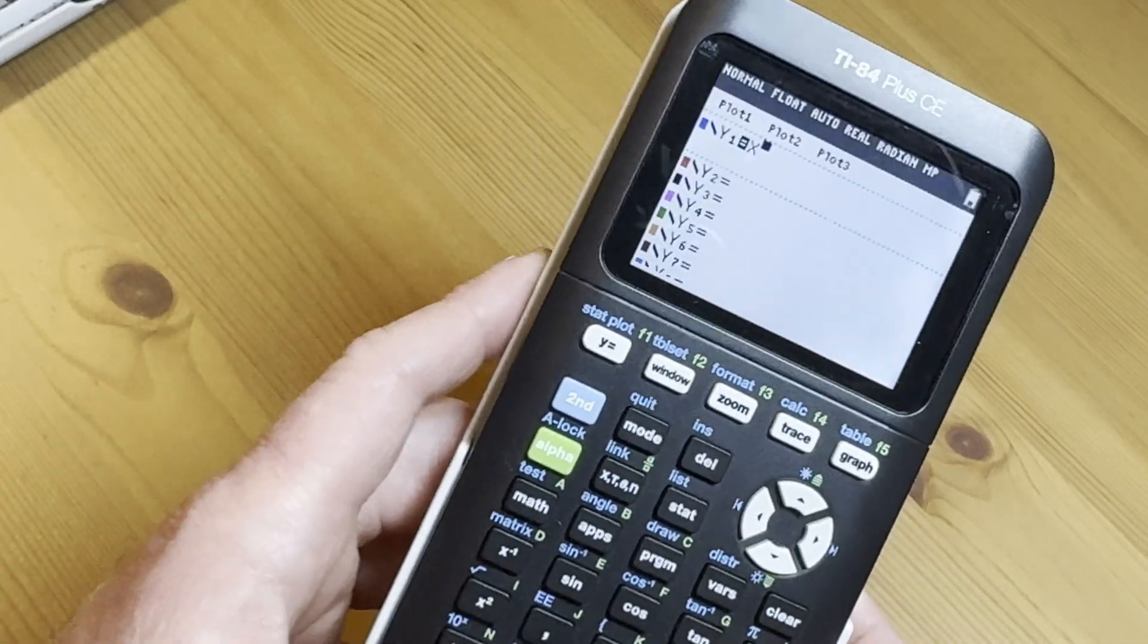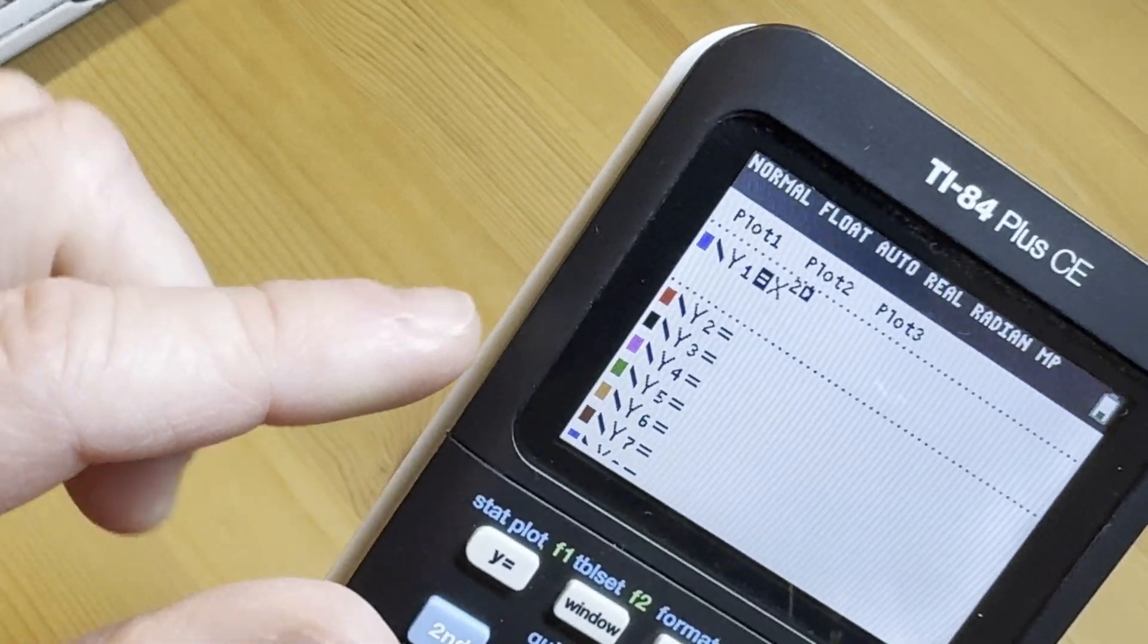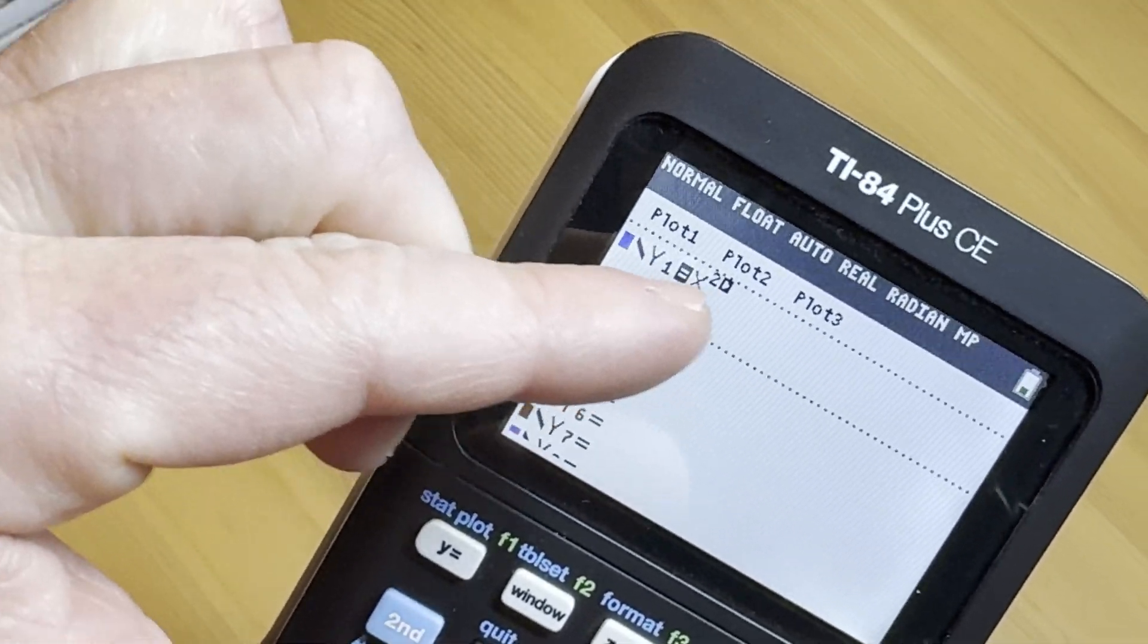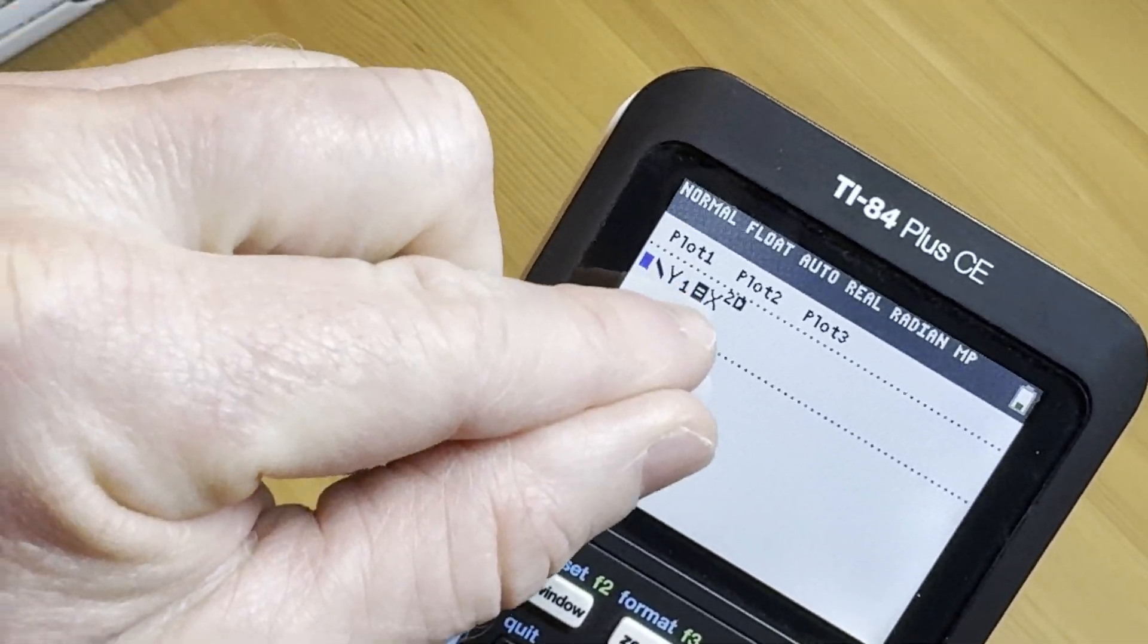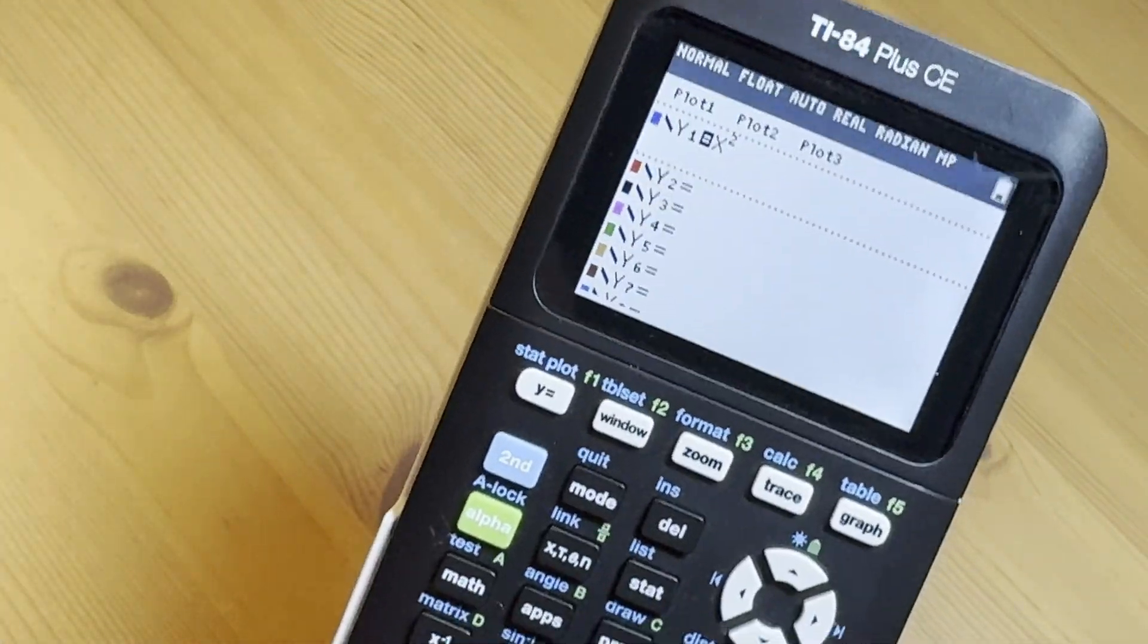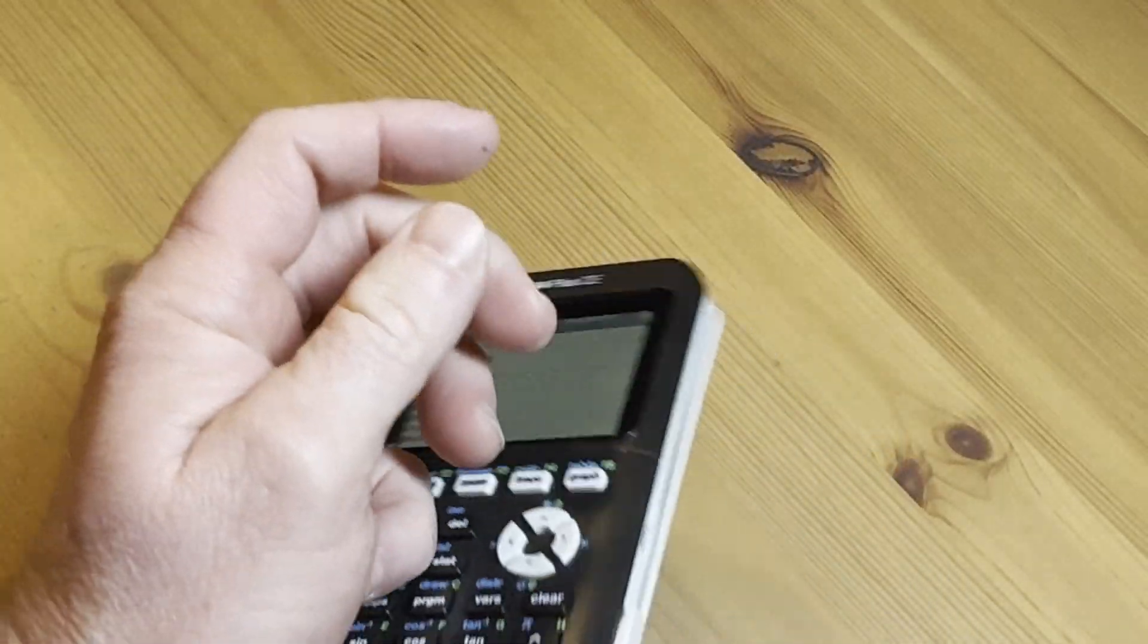So I can do X squared. This one also has what's called the pretty print. You see how it has that little exponent, like the exponent thing? It shows up nicely. Whereas on this one, I'd show you, but I can't turn it on. It doesn't have that feature.